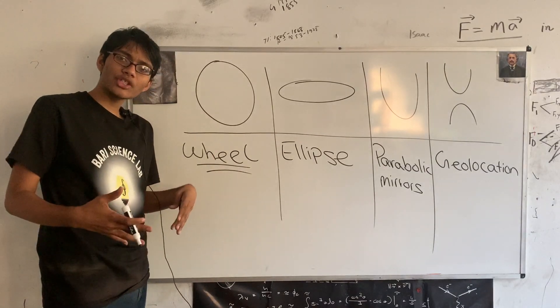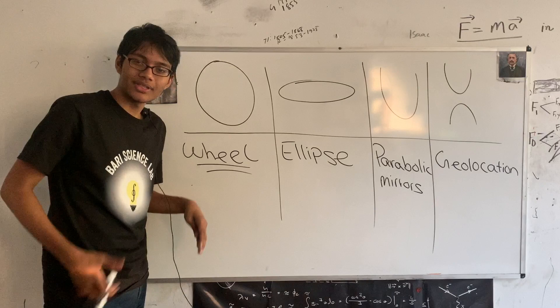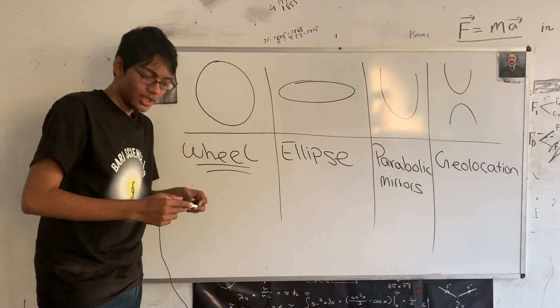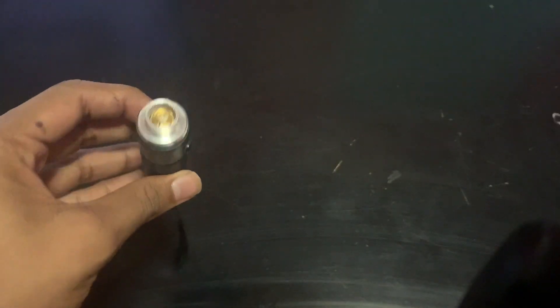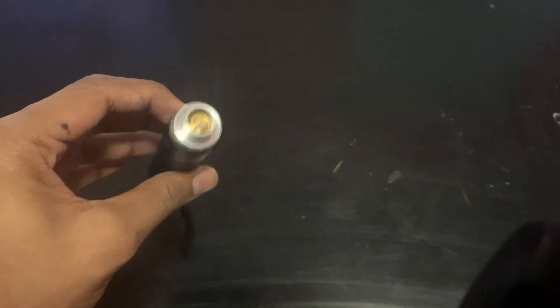With that being said, how can we actually make these conic sections in real life? Well, let me go ahead and show you right now, okay? So here we have a class 3 laser 100 milliwatts. We're going to shine it on the table and try to see if we can produce any conic sections, alright?